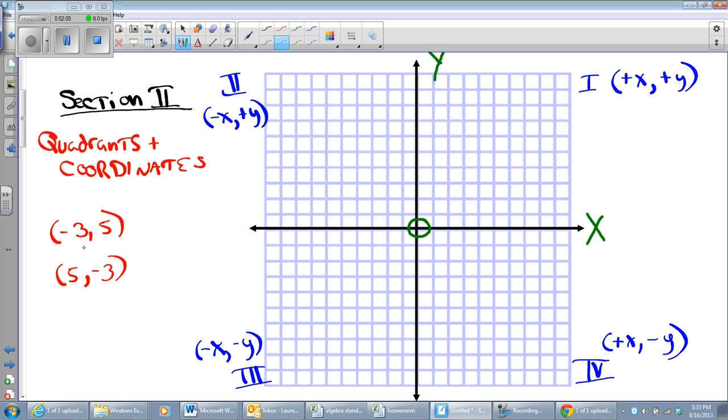So if I have to take this point, negative 3, 5, I'm on the x-axis, I'm going to go negative 3. In other words, I'm going to go to the left. 1, 2, 3, and then I'm going to go positive in the y direction. 1, 2, 3, 4, 5. You should never get the x and y screwed up because they're alphabetical. X comes before y in the alphabet. So the number that comes first is the x-coordinate. By the way, that is in Quadrant 2.